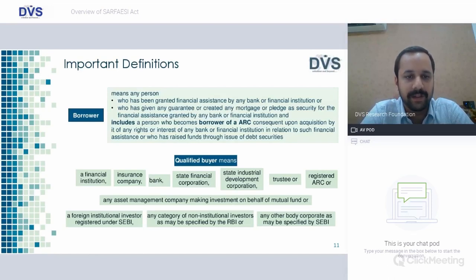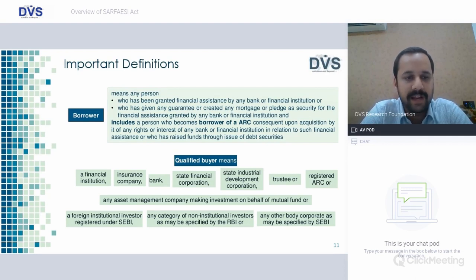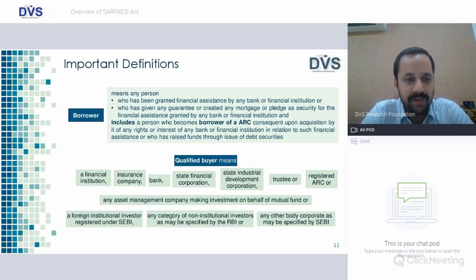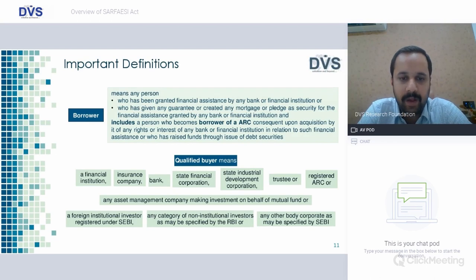Who are Qualified Buyers? Qualified buyers means a financial institution, an insurance company, bank, state financial corporation, state industrial development corporation, trustee or registered ARC, or any financial management company making investment on behalf of mutual funds, or a foreign institutional investor registered under SEBI, any category of non-institutional investor as may be specified by the RBI, or any other body corporate as may be specified by SEBI.